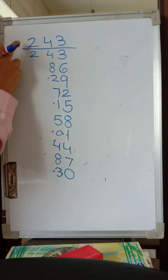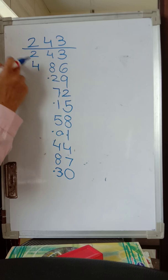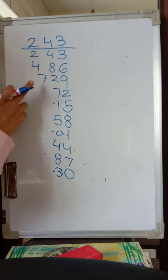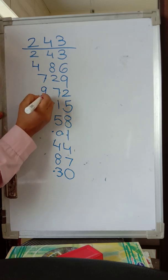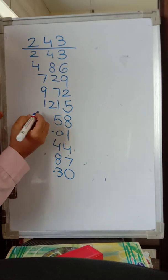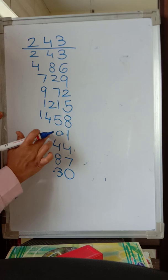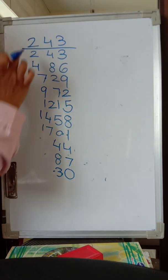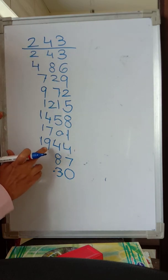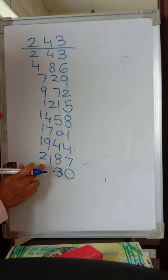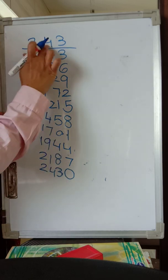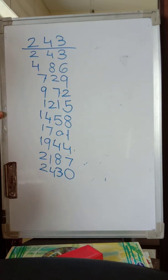Let us go for the hundreds column. 2 plus 2 is 4 — nothing there, so simply 4. 4 plus 2 is 6, plus 1 dot is 7. 7 plus 2 is 9. 9 plus 2 is 11, plus 1 dot is 12. 12 plus 2 is 14 — nothing there, so 14. 14 plus 2 is 16, plus 1 is 17. 17 plus 2 is 19 — nothing there, so 19. 19 plus 2 is 21. 21 plus 2 is 23, plus 1 dot is 24. So we get 243 × 10 is 2430. That is what we got!